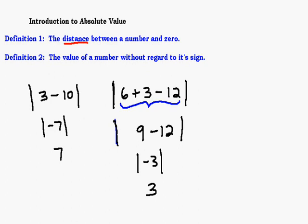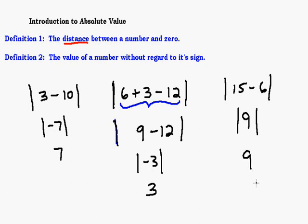Let's do one where it comes out positive: the absolute value of fifteen minus six. Fifteen minus six is nine, and the absolute value of nine is just nine — if it's positive you just keep it positive and drop the absolute value. Hopefully this helped you understand what absolute value means and what to do with it. It pops up here and there, but you probably won't see it a whole lot until later on. It's just good to know what it means and how to deal with it.